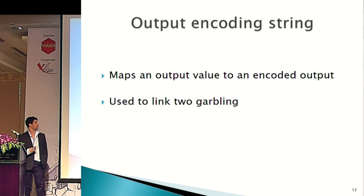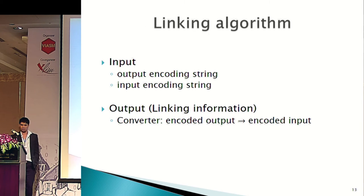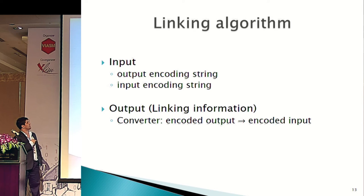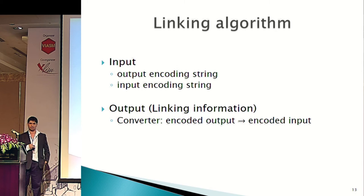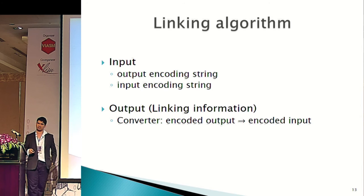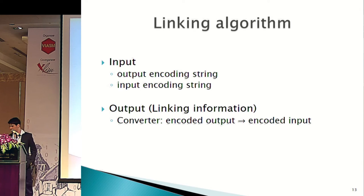What's an output encoding string? It just maps an output value to an encoded output, very similar to the input encoding, and it's going to be useful to link two goblings. This is one of the key things in the reactive gobbling scheme: the linking algorithm. It takes the output encoding string of one function and the input encoding string of another function and links them together, giving us something called the linking information. Basically, it allows us to take an encoded output and convert it into an encoded input for another gobbled function.